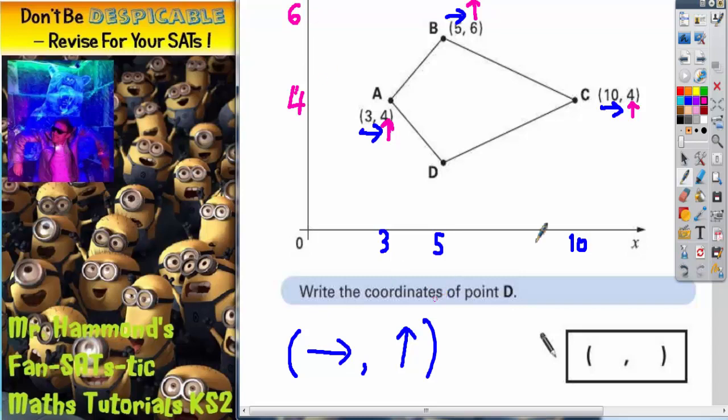So how does this help us? Well, point D, if we look at point D, from 0 we've got to go 5 along. It's level with B when you go along, and B is 5 along. So D also must be 5 along. So the first number of the coordinate must be 5.